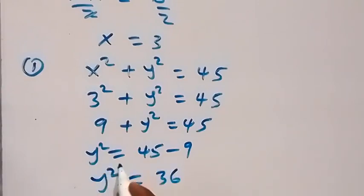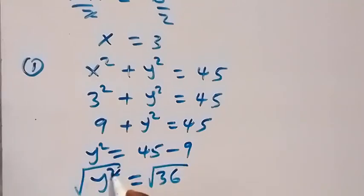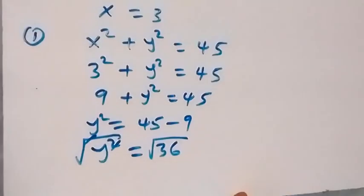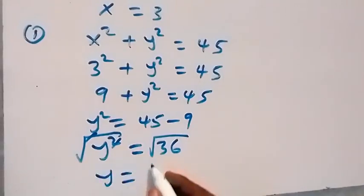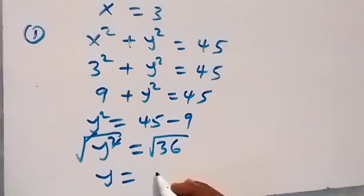Taking the square root of both sides, the square and square root cancel, giving y equals plus or minus 6. But since we are interested in positive numbers, y equals 6.